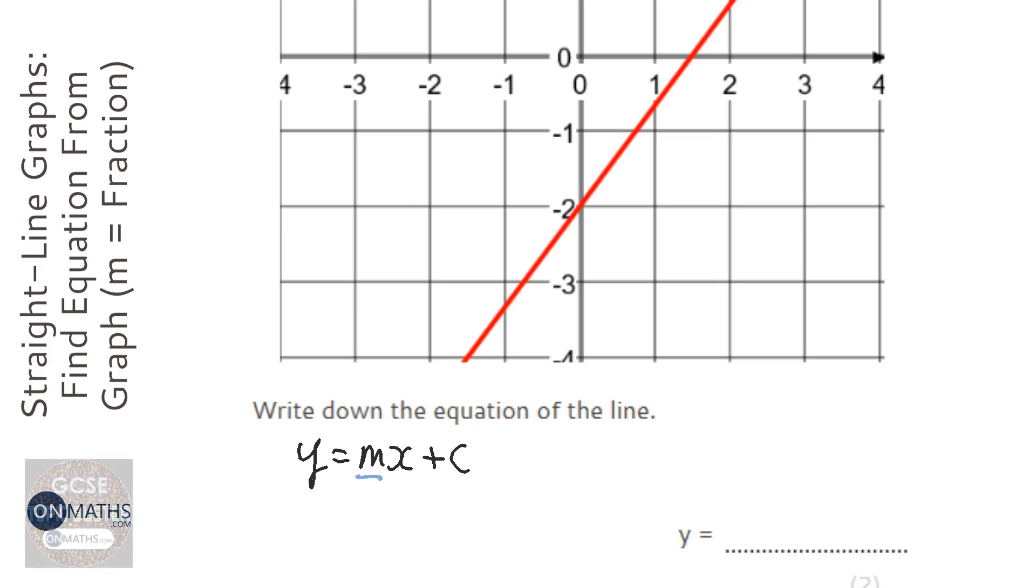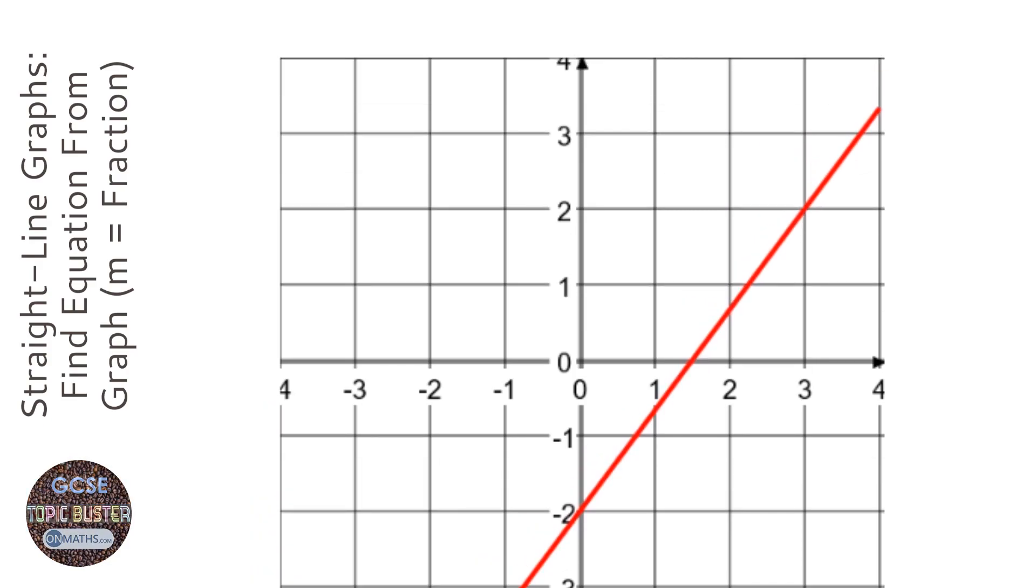Now this gives you two things you've got to find, m and c. Once you find those things you've answered the question. Now the c is the easier of the two to find. The c represents where your line will hit the y-axis.